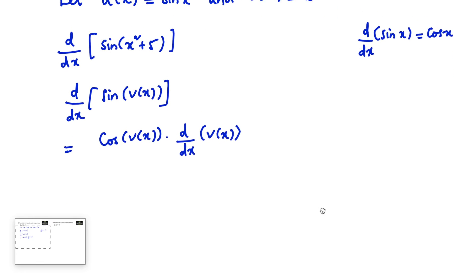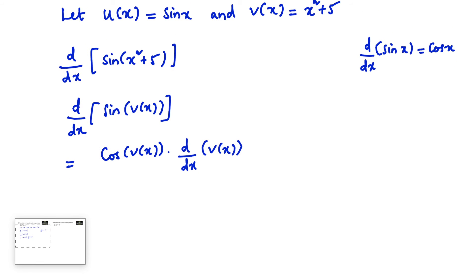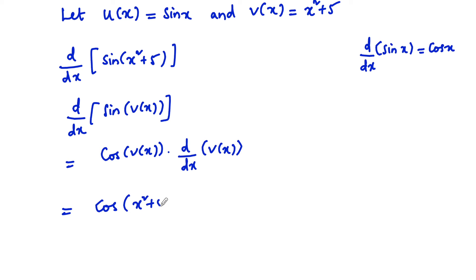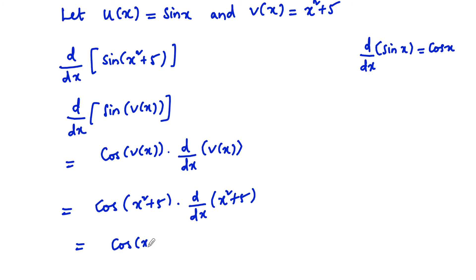Substituting back, v(x) = x² + 5, so we have cos(x² + 5) multiplied by d/dx of (x² + 5). This gives cos(x² + 5) times the differentiation of x², which is 2x.